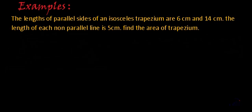Hi, so we have one more example. Let's first read the statement. The length of parallel sides of an isosceles trapezium are 6 centimeters and 14 centimeters. The length of each non-parallel side is 5 centimeters. Find the area of the trapezium.